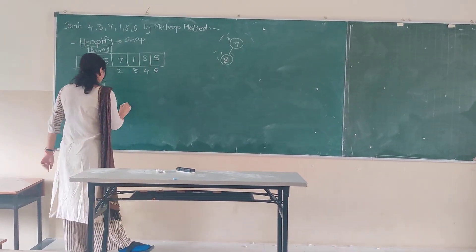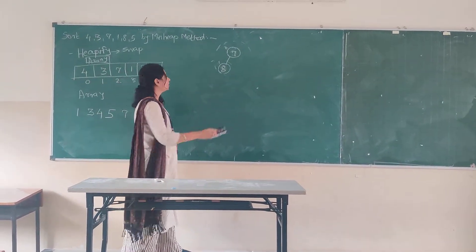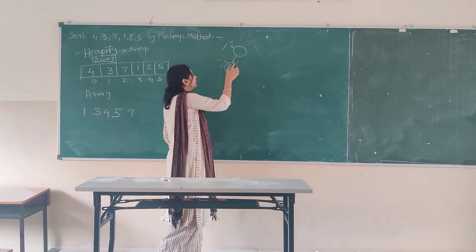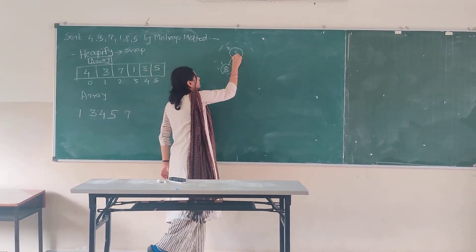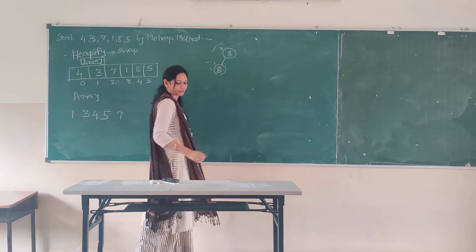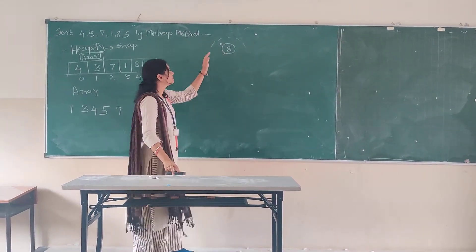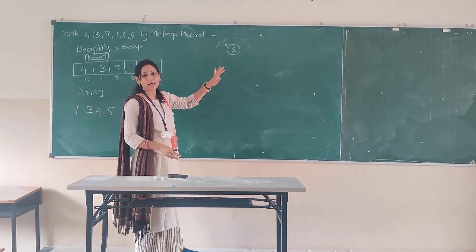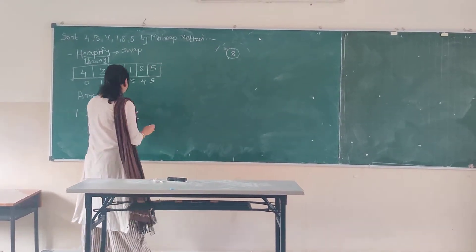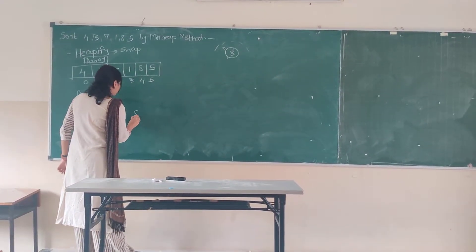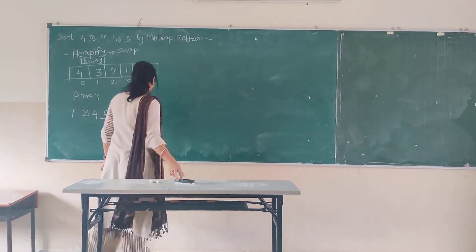After taking 7, the element at the last location is 8, and there is nothing left to compare. So we take element 8 into our sorted array. Our tree is now complete.